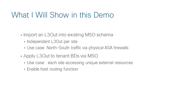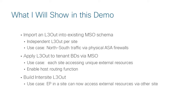I'll also quickly show you what it looks like when I enable the host routing function. Then I'll go on to build what we call an inter-site L3 out, showing that an endpoint in one site is now able to access external resources either locally or unique external resources via the other site and vice versa.